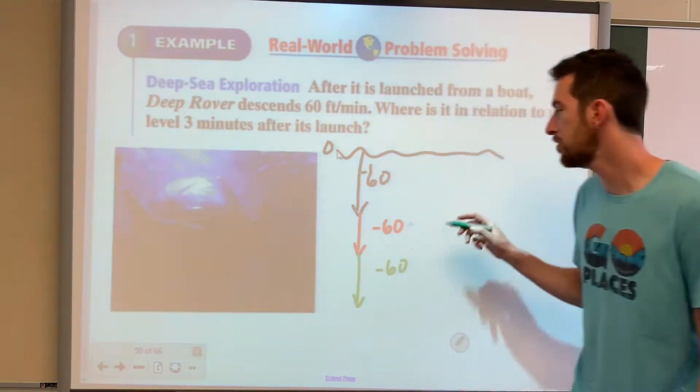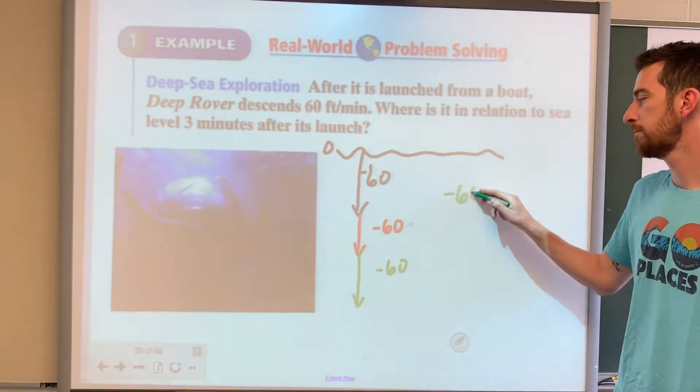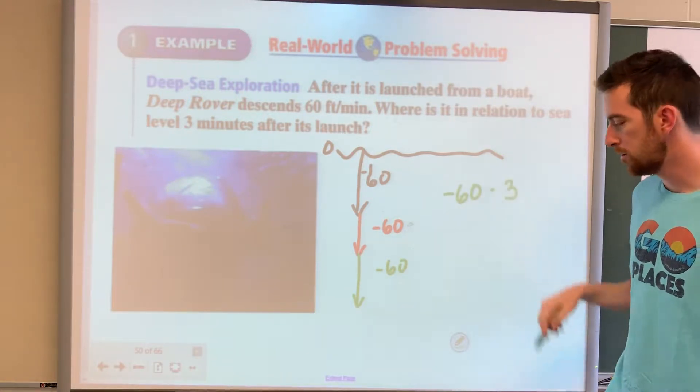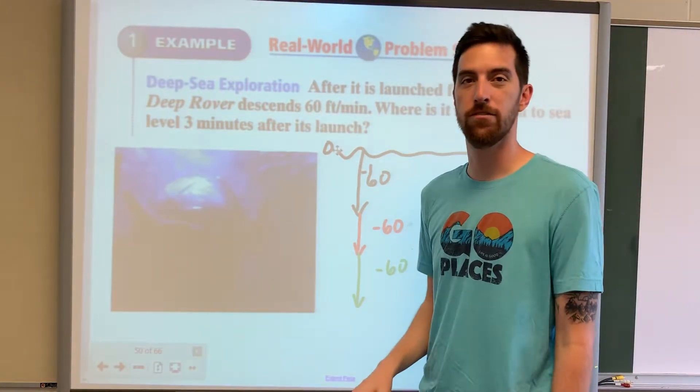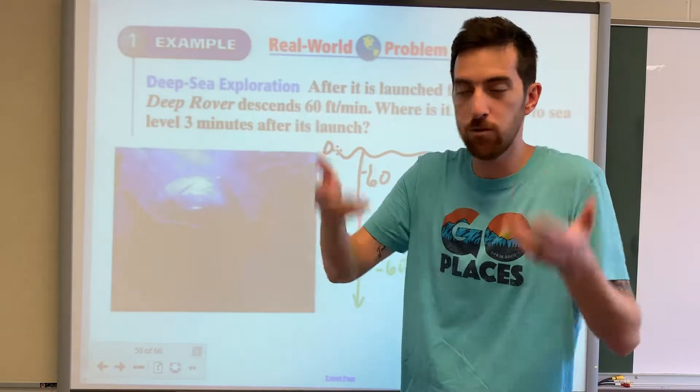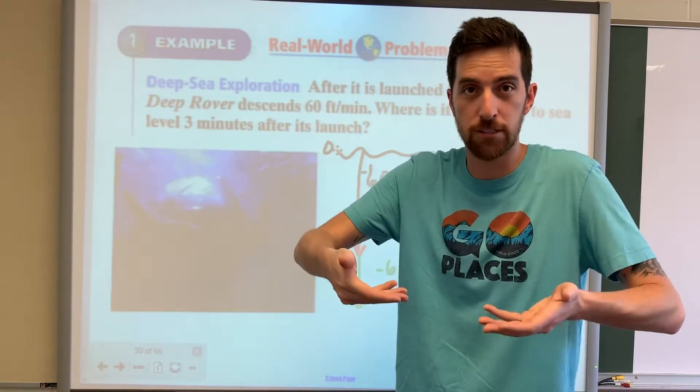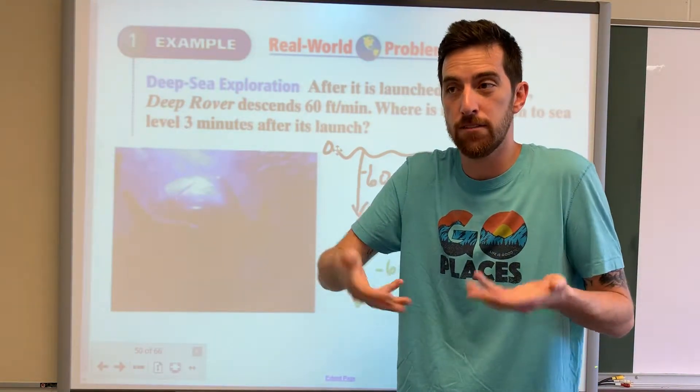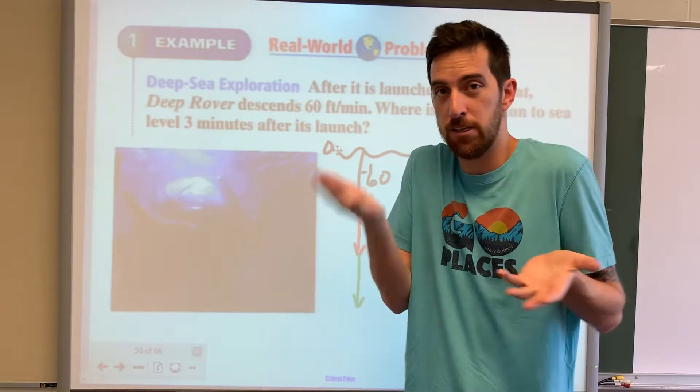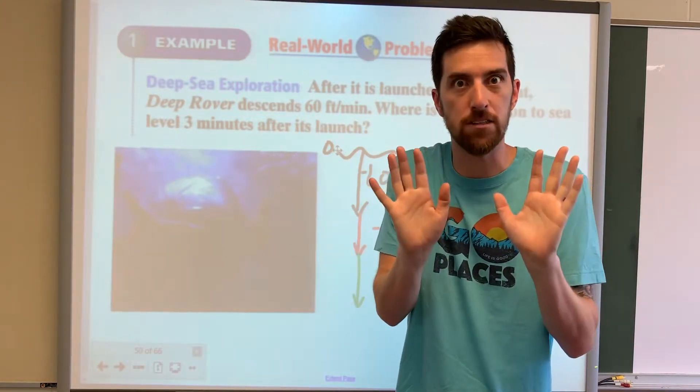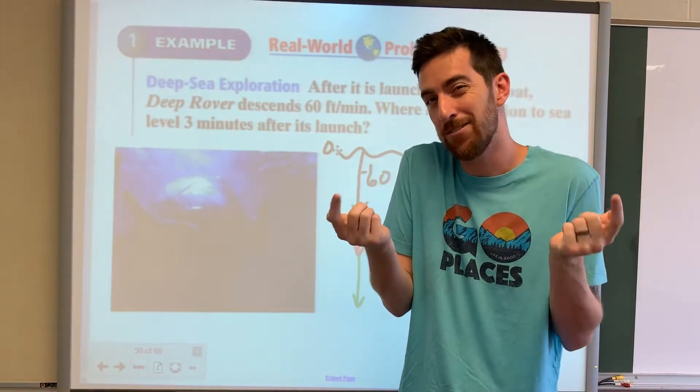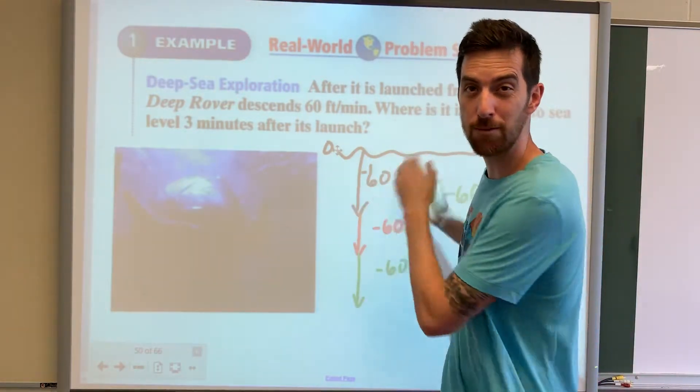So the rule for multiplying or dividing integers: if they're two of the same, if they're both positive or both negative, then it comes out positive. So positive times positive is positive. Negative times negative, the negatives cancel each other out and it becomes positive. Anytime you have one of each, it's going to result in a negative number.